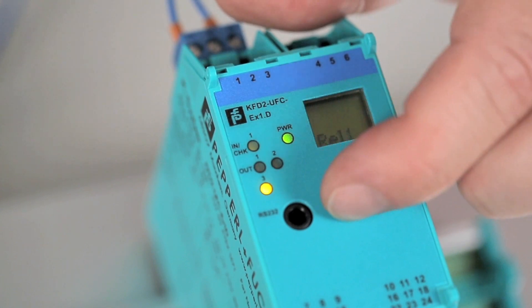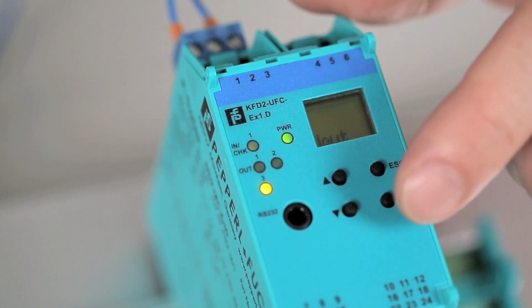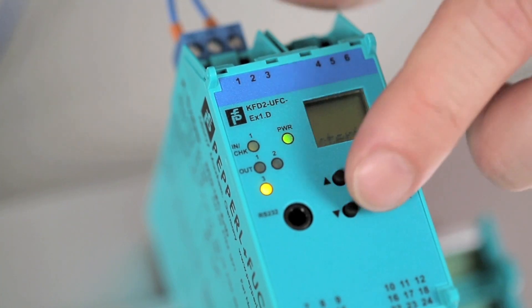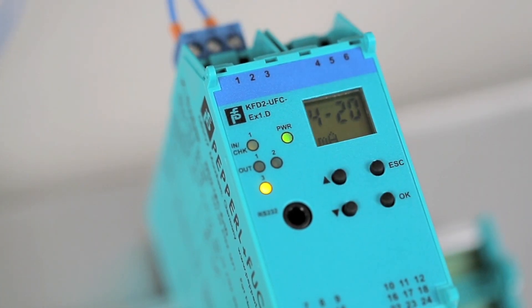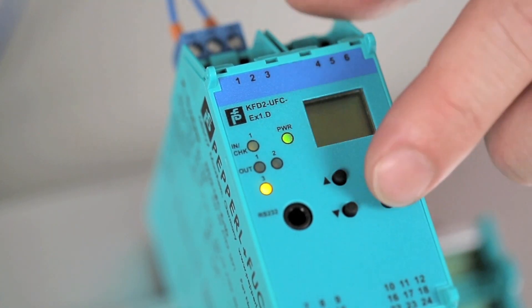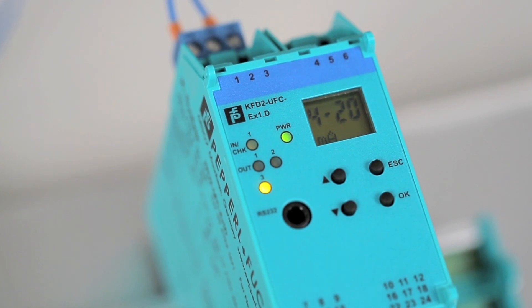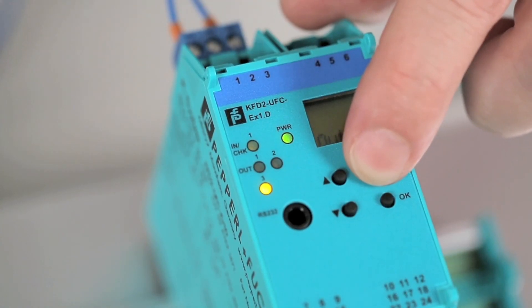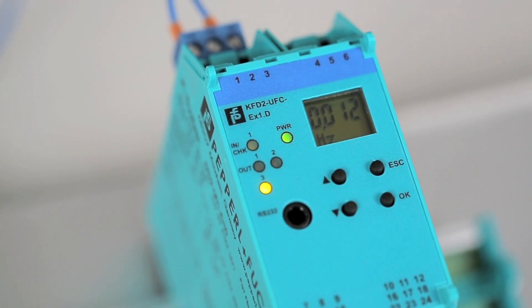In the submenu, we choose I out. Confirm with OK again. And now the display shows the word characteristics. We confirm and we get various characteristics. We choose the first one, NAMO 4 to 20 mA. Confirm with OK again. So now we press the Escape button until the measurement value appears again on the display.